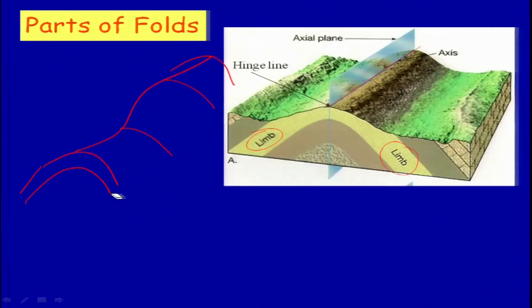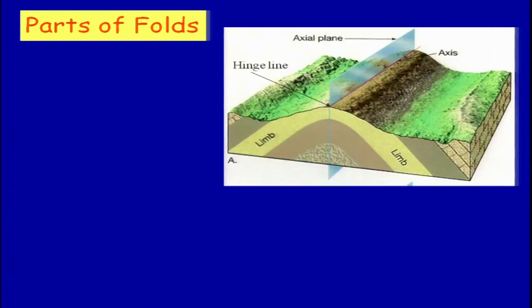This is a very important part that we should know and keep in mind while interpreting satellite data — that is, the limbs and hinge line, whether both limbs are dipping with the same amount, or one is inclined and one is not, and what is the axis. Because putting a tunnel at the core of a fold would be a very bad idea, as the rocks at the center — what we call the core of the fold — will be under tremendous pressure, making excavation extremely difficult.